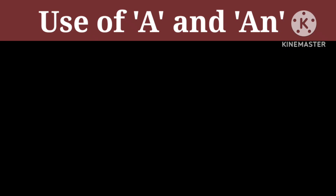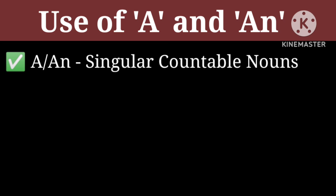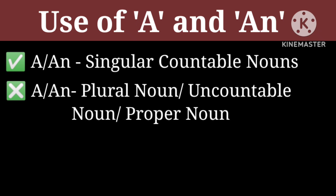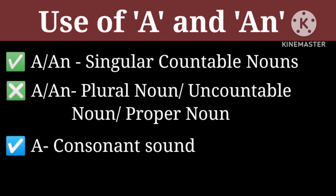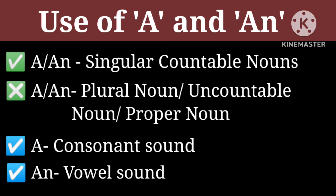Hello everyone, today we will learn the use of 'a' and 'an' in a sentence. We use 'a' or 'an' before singular countable nouns. We don't use 'a' or 'an' before plural nouns, uncountable nouns, or proper nouns. We use 'a' before nouns that begin with a consonant sound, and 'an' before nouns that begin with a vowel sound.